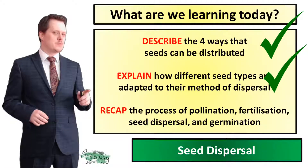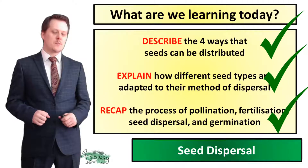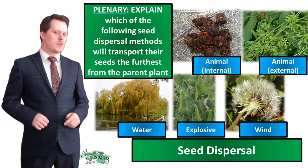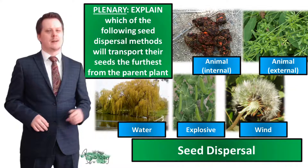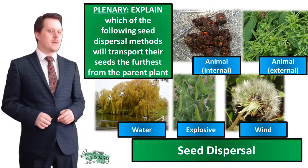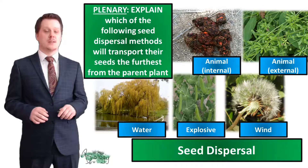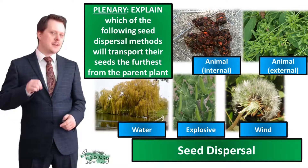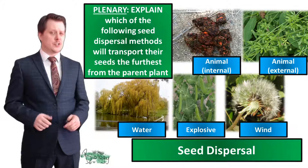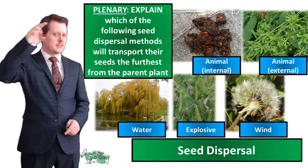This recap of the process of pollination, fertilisation, seed dispersal, and germination brings all the ideas from this plant reproduction topic together. We've got one more thing to do before we wrap this lesson up — I'd like you to explain which of the following seed dispersal methods will transport their seeds the furthest from the parent plant. With an explain question you need to say which one you think will disperse the seeds the furthest and give the reason why. If you've got any really good answers I would love for you to share them in the comments below. That's everything for this topic, I hope you've had a great lesson, and I'll see you next time.